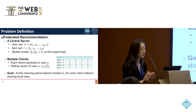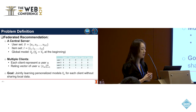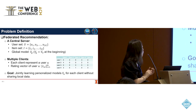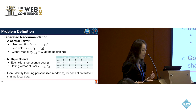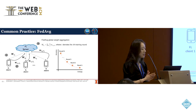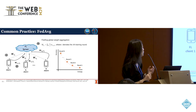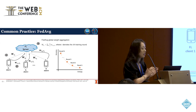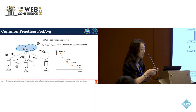The ultimate goal of the recommender system is to learn personalized models for each client, benefiting from diverse local data while maintaining user privacy. Let's take a look at the very typical federated learning algorithm: FedAvg. This is a standard approach in federated learning to aggregate updates from multiple clients to a central server.